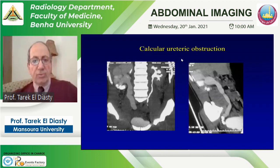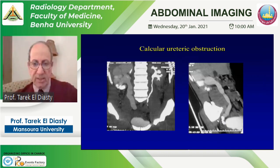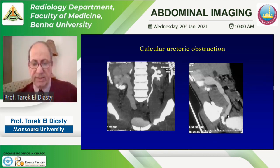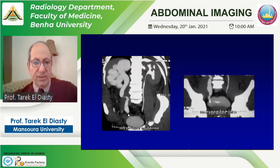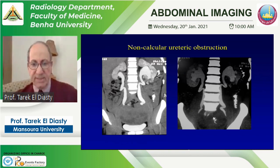In hydronephrosis due to calcular obstruction, CT can assess lower caliceal stones and lower ureteric stones using different reformatted images, determining whether stones are obstructing or if there is a ureteric stricture proximal or distal to the stone. In cases of non-calcular ureteric obstruction, CT urography can show a large pelvic mass displacing the bladder and obstructing both ureters — in this case, a sarcoma with calcification.